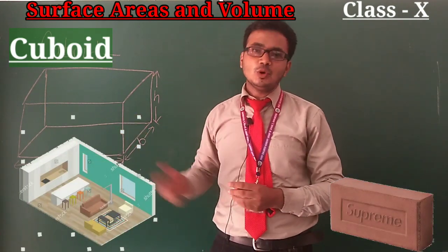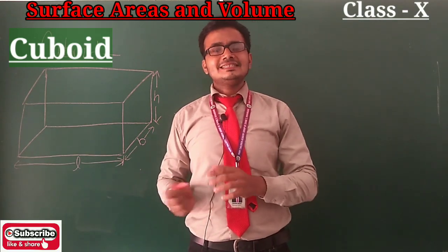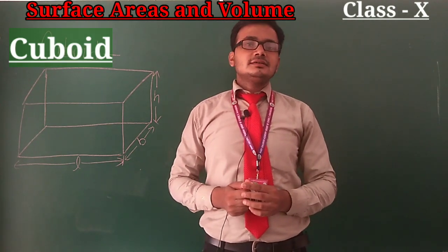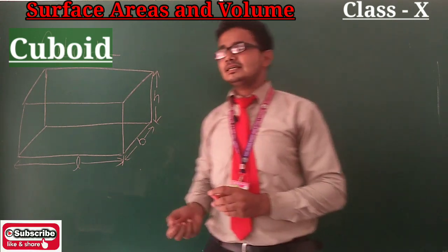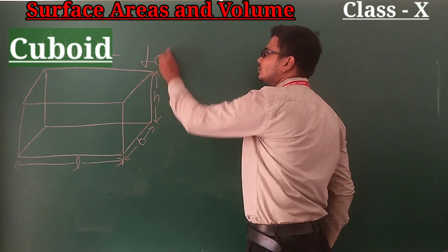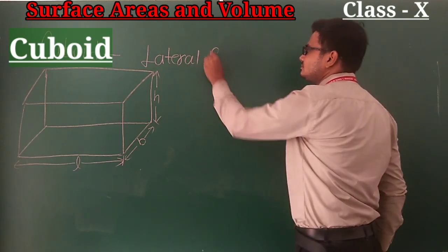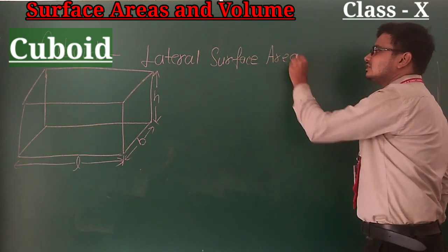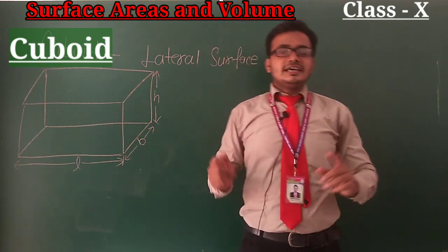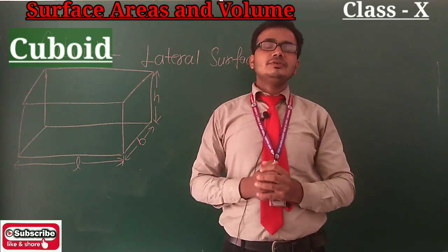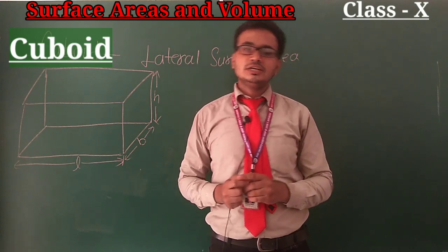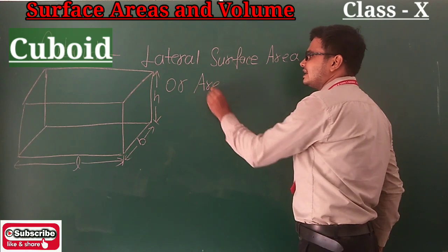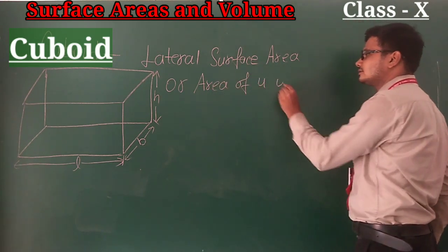Your room is also in the shape of a cuboid, or maybe a cube. In this chapter, we will discuss Lateral Surface Area, Total Surface Area, and Volume. First, we will discuss the Lateral Surface Area of a Cuboid. Lateral Surface Area means the area of four walls — in a room, we calculate only the area of four walls.